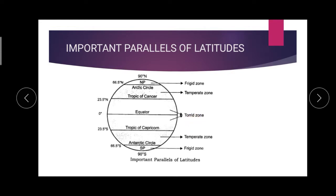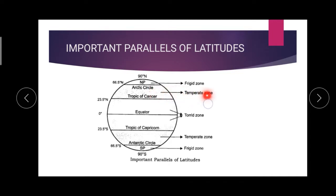The place between the Tropic of Cancer and the Arctic Circle — since it is at the north, it is called the North Temperate Zone.